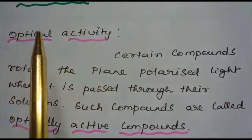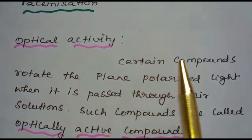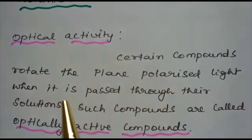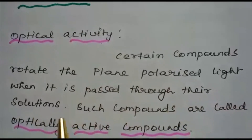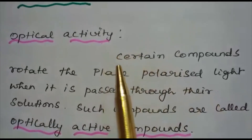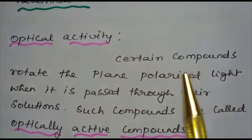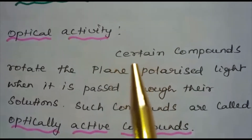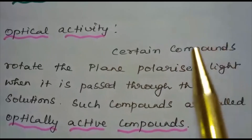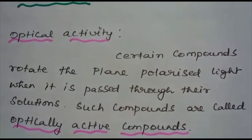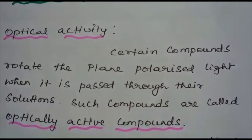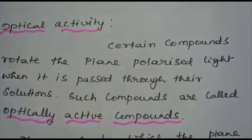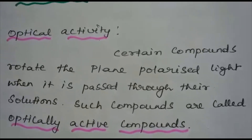First, let us discuss optical activity. Certain compounds rotate the plane polarized light when it is passed through their solutions. Such compounds are called optically active compounds. Plane polarized light is obtained when ordinary light is passed through a Nicole prism. A Nicole prism is a type of polarizer — an optical device made from calcite crystal, which is used to produce and analyze plane polarized light.